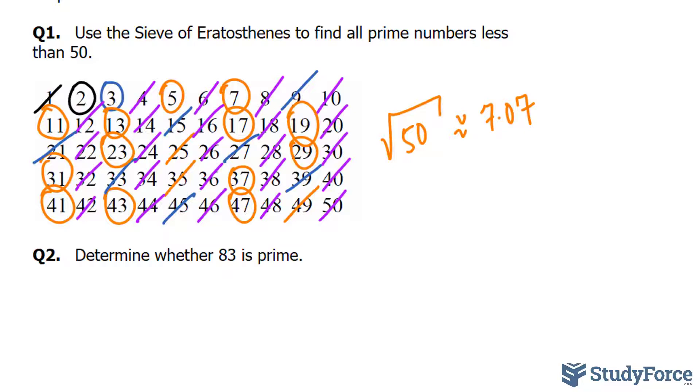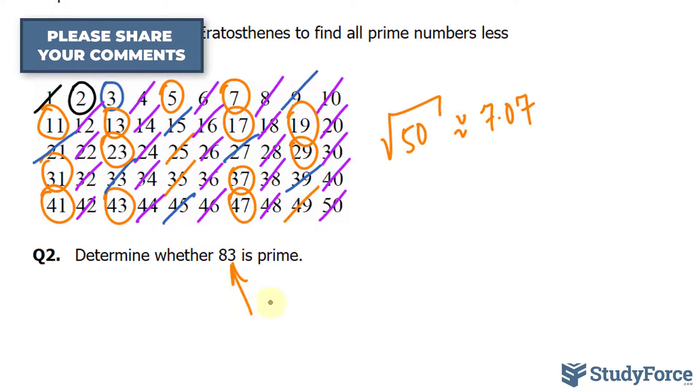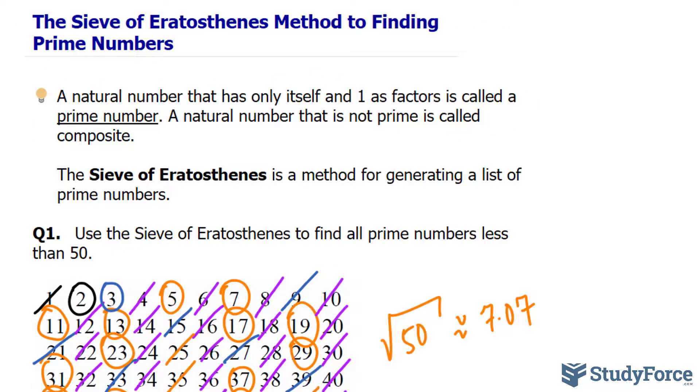We don't test beyond 7 because the next prime is 11, and since 11 is greater than the square root of 83, which is approximately 9.1, there's no point checking prime numbers greater than the square root. Therefore, 83 is prime. And there you have it—methods you can use to find prime numbers.